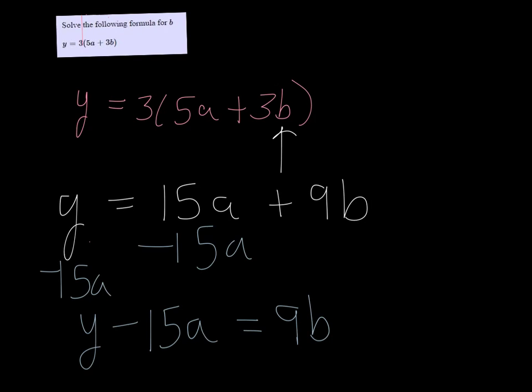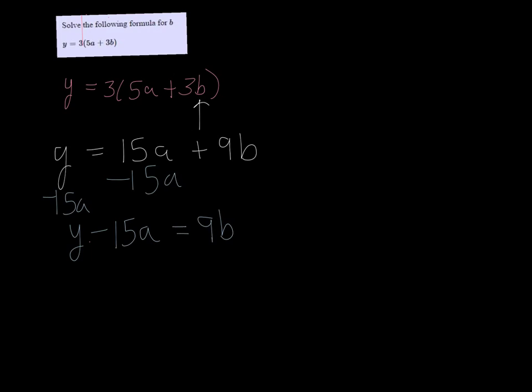Now the only thing left to get rid of so that b is by itself is that 9. So I want to divide both sides by 9.